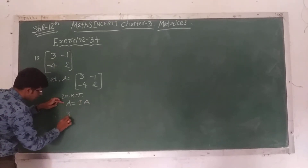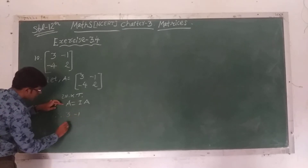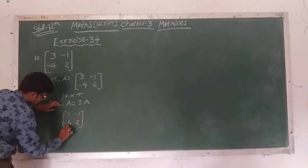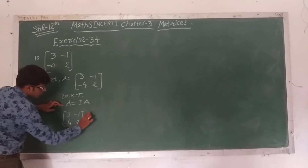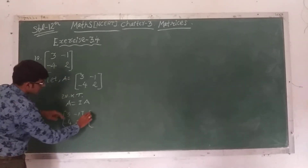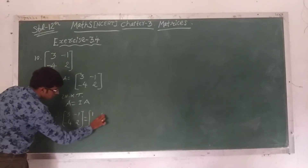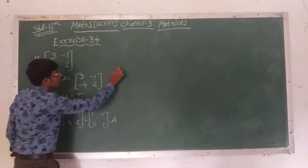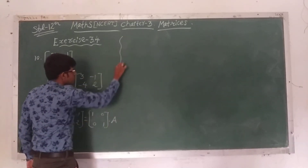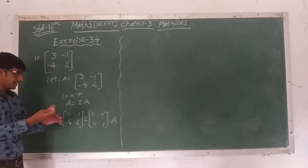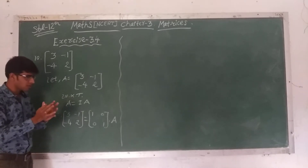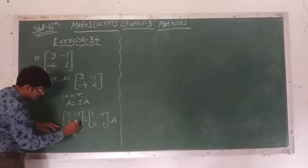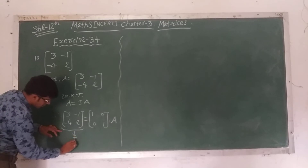If the value of A is [3, -1; -4, 2], it equals the identity matrix [1, 0; 0, 1] times A. Our goal is to write the left side as the identity matrix.